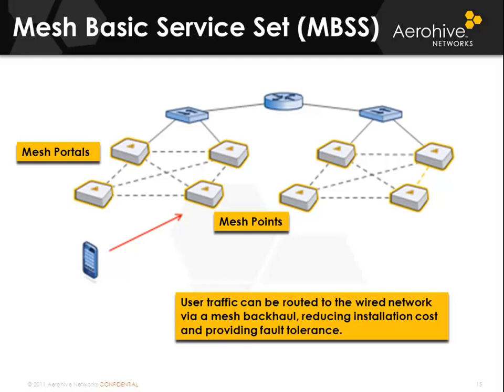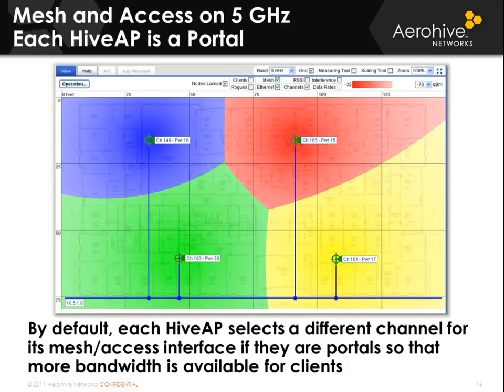The mesh can be set up purposely or dynamically if a mesh portal loses its Ethernet connection — the device automatically tries to mesh to other Hive APs using the 5 GHz radio. User traffic in a mesh is routed back to the wired network via the mesh from AP1 to the second AP and out that AP's Ethernet connection. This reduces installation costs. For example, in a school with modular classrooms that may be relocated, rather than running Ethernet cables, you could place an AP170 outdoor model outside the school and have APs connect to it via mesh link, avoiding cabling costs entirely.